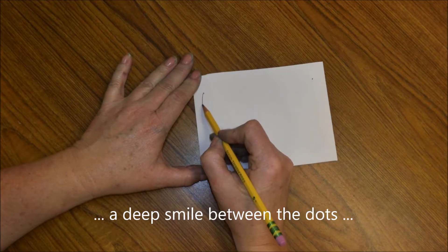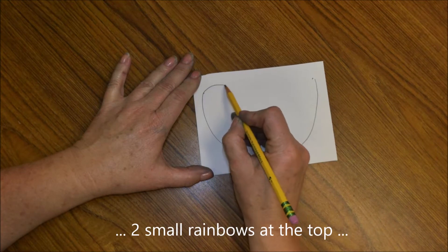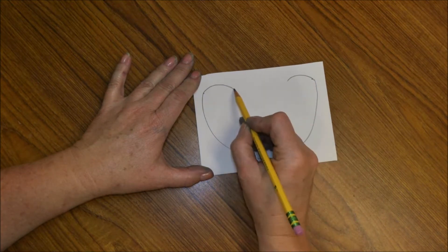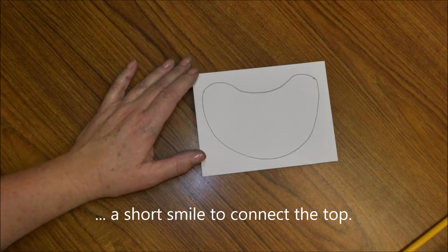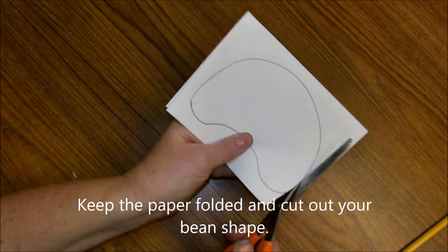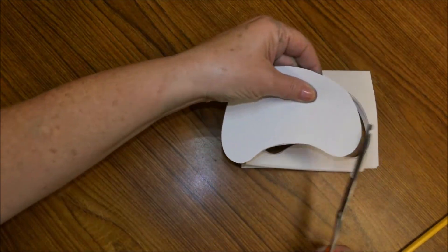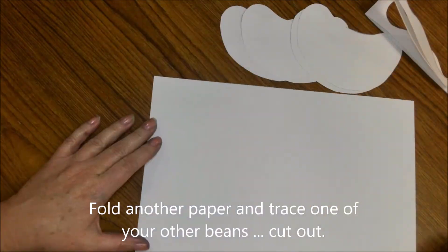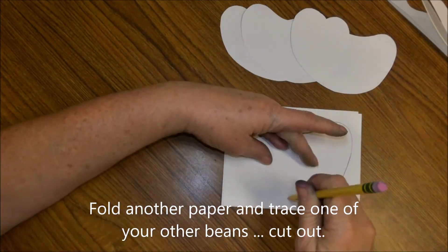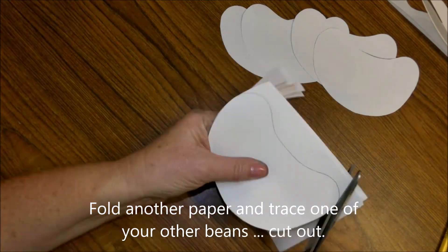Make a great big smile between those two dots. Do two small rainbows at the top edge and then connect those two small rainbows. Keeping your paper folded, carefully cut the bean shape out. You'll be folding a second piece of paper the same way we did the first, then tracing around one of your bean shapes and cutting.